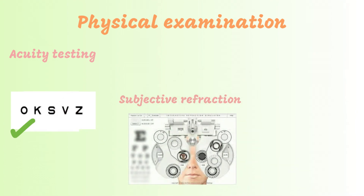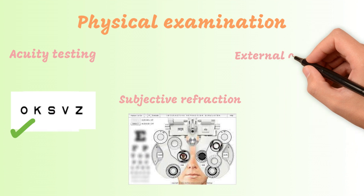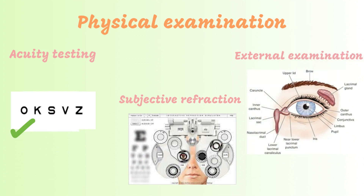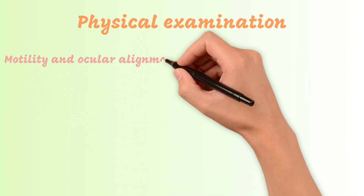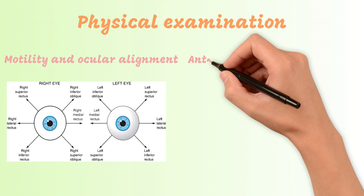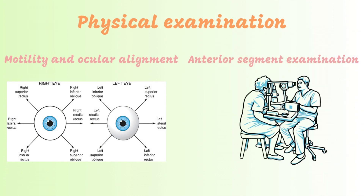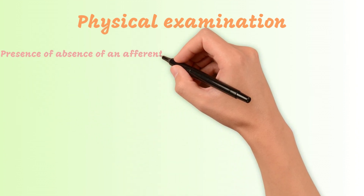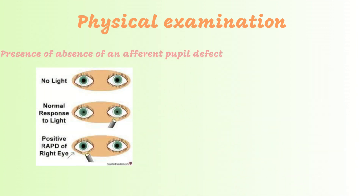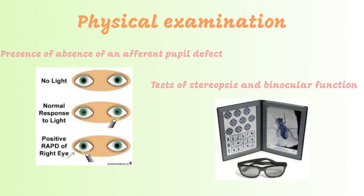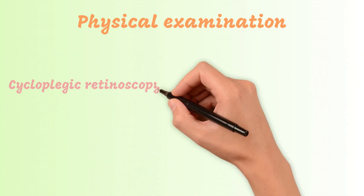Subjective refraction. External examination: looking for ptosis, lid hemangioma, or other lesions which could affect visual development. Motility and ocular alignment. Anterior segment examination: looking for any media opacity or irregularity. Presence or absence of an afferent pupil defect. Tests of stereopsis and binocular function. Cycloplegic retinoscopy. Fundoscopic examination.